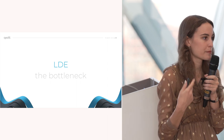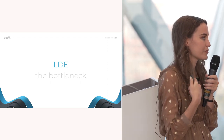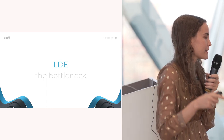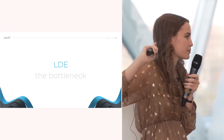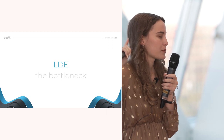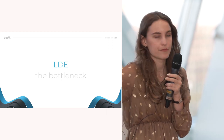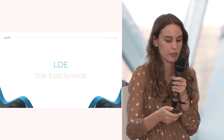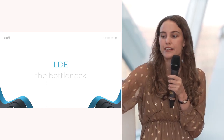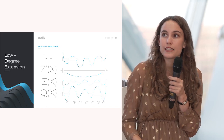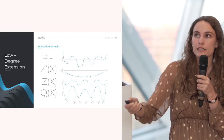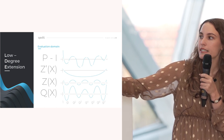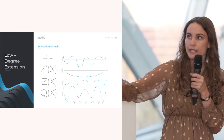This is where the low-degree extension comes in, and it's a bottleneck because it requires plenty of interpolations and multi-point evaluations — quasi-linear procedures. This is why STARKs are quasi-linear: if you improve this part, STARKs would be significantly faster. You end up with polynomials defined over these group elements — the blue points.